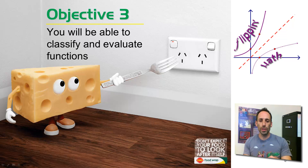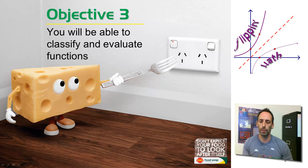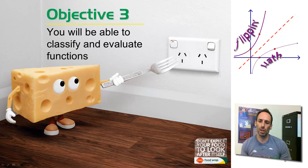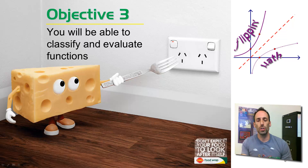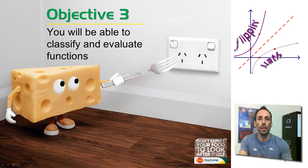This is an advertisement not from this country. You can see the electrical sockets — they look kind of weird. Down at the bottom right corner it says, 'Don't expect your food to look after itself.' It's some sort of Saran Wrap thing, because this piece of cheese is going to be sticking a fork in the electrical socket. I chose this because that second part of the objective — evaluate functions — that's what you're doing. You're plugging a number into your function. That's all it is, and it's pretty easy to do.